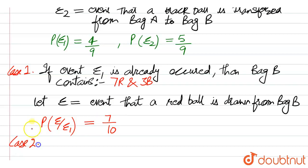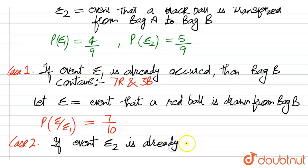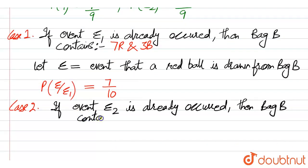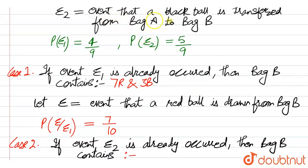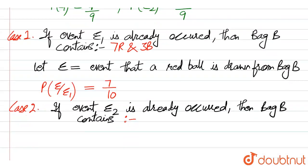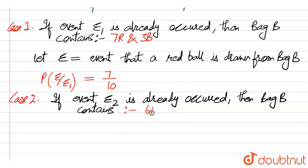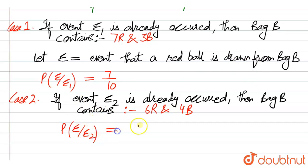Case two: when event E2 has occurred, we selected a black ball from bag A, so the count of black balls in bag B increases. Bag B would then contain six red balls and four black balls. So the probability of event E — a red ball being drawn from bag B — in the second case is 6 out of 10.